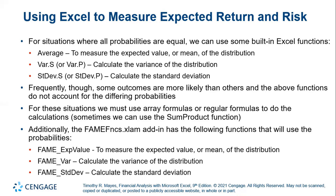Frequently, though, some outcomes are more likely than others, and those functions do not account for the differing probabilities. For those situations, we must use array functions or regular formulas to do the calculations. Sometimes we can use the SUMPRODUCT function. Similarly, the Famine NCS add-in has functions that will use the probabilities.